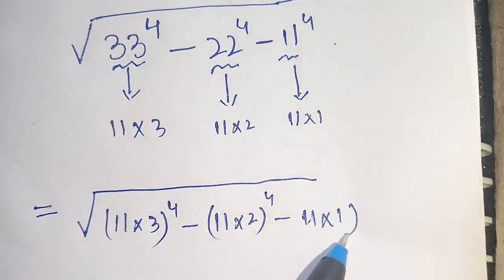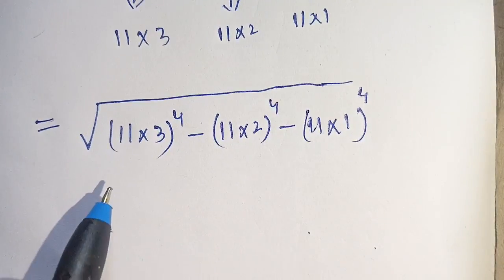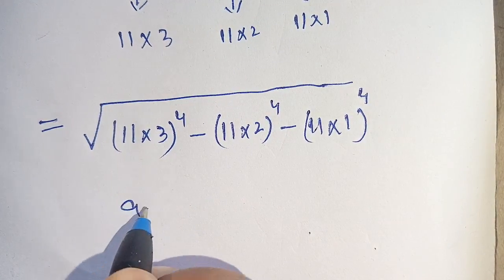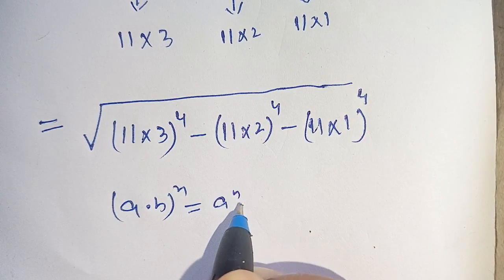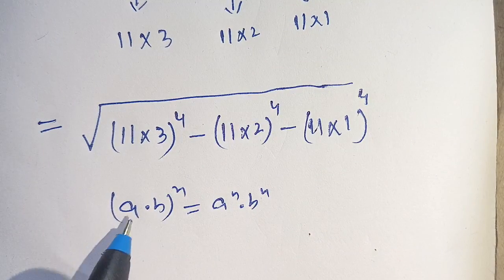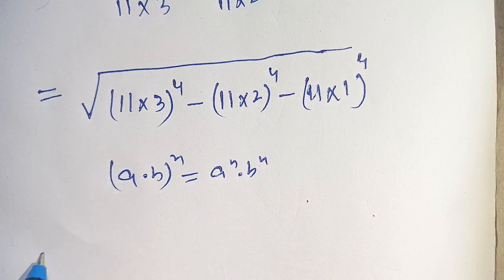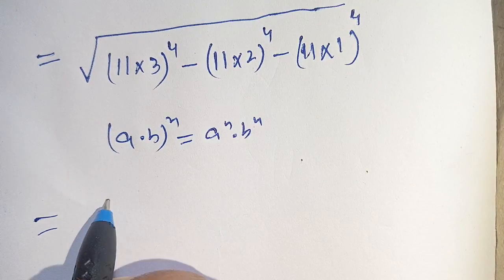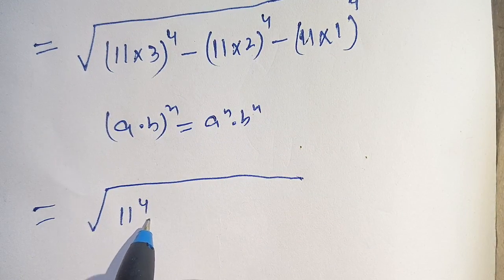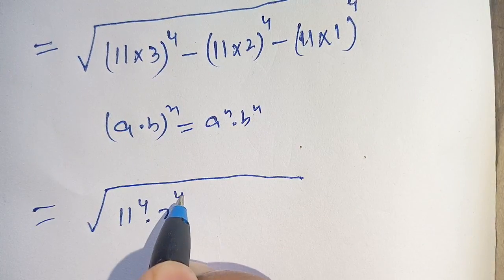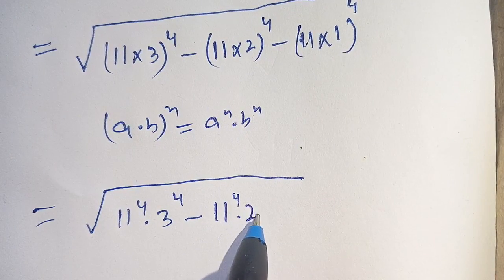In the next step, we know that (a times b) power n can be written as a power n times b power n. We use this identity on all three terms and get square root of 11⁴ times 3⁴ minus 11⁴ times 2⁴ minus 11⁴ times 1⁴.